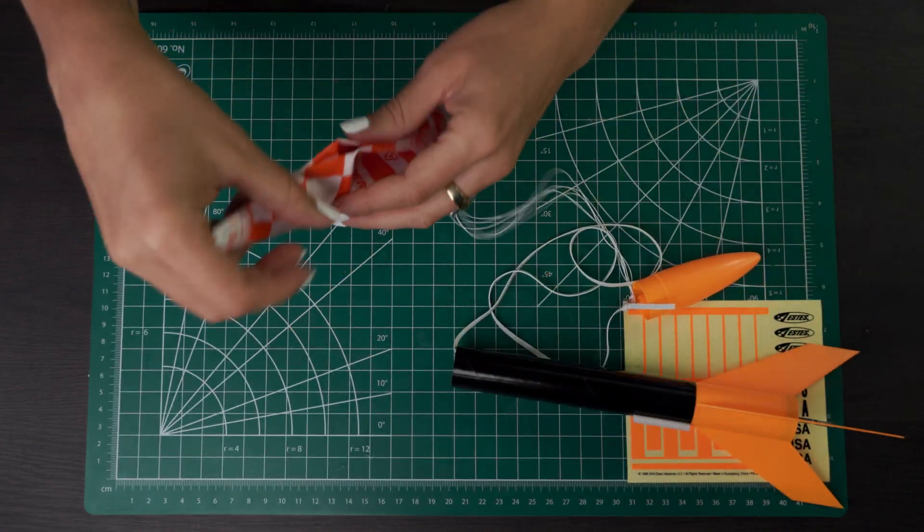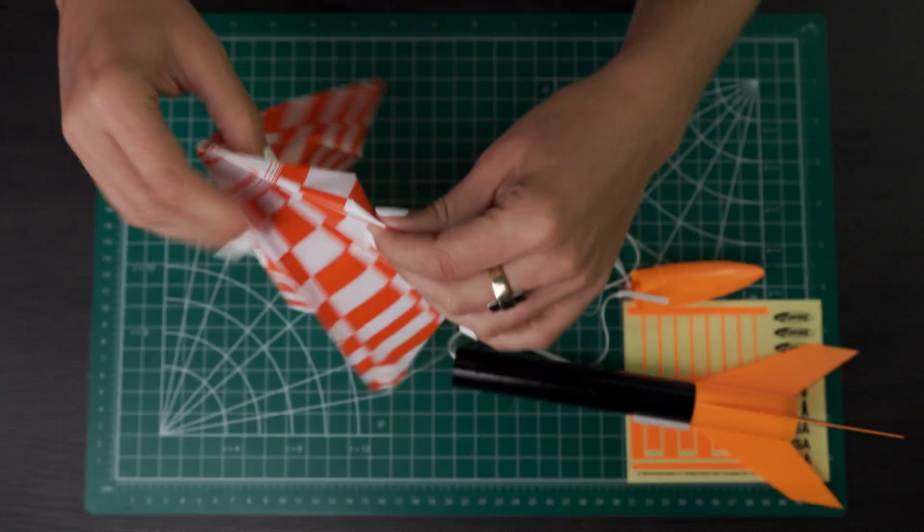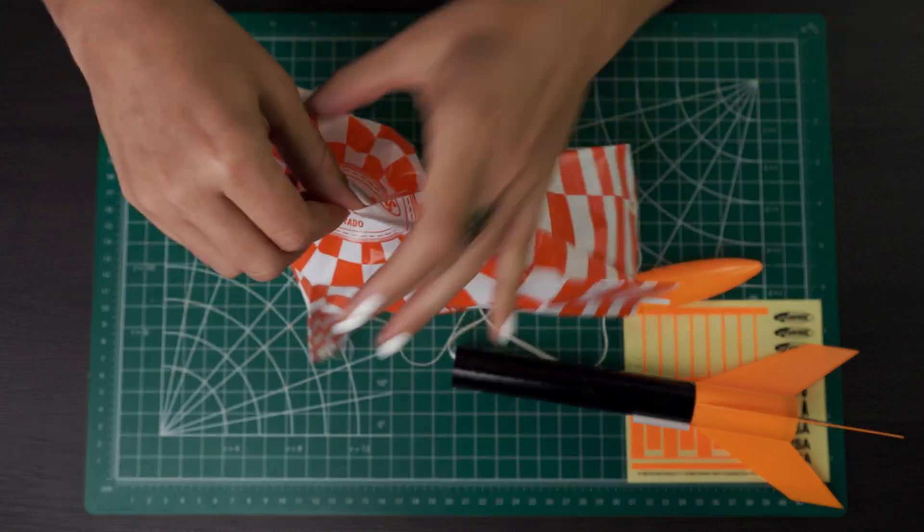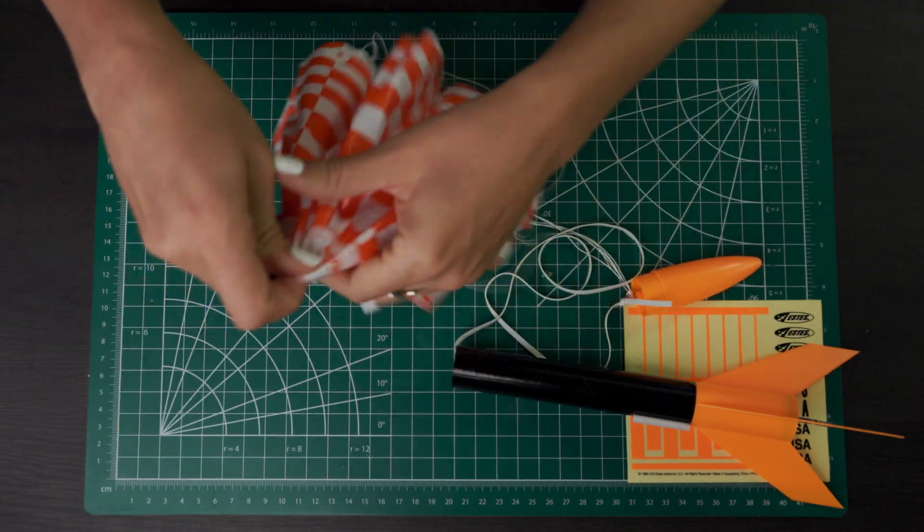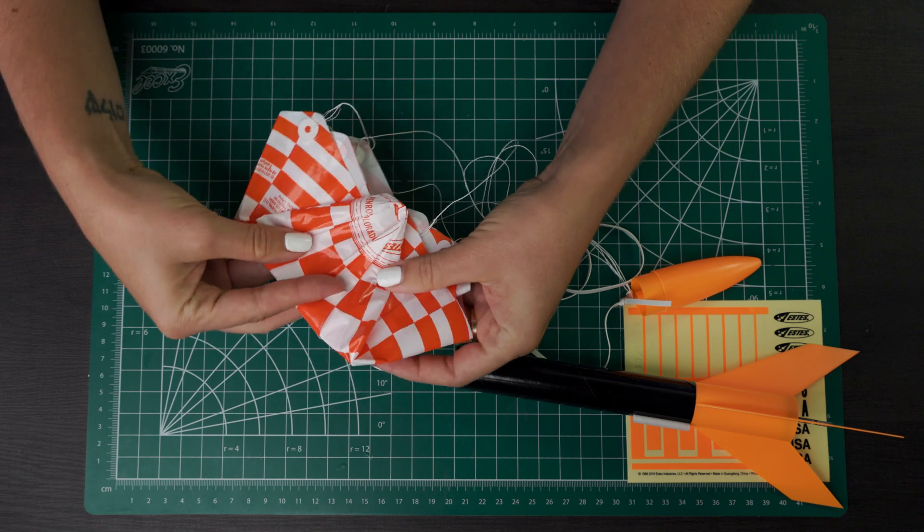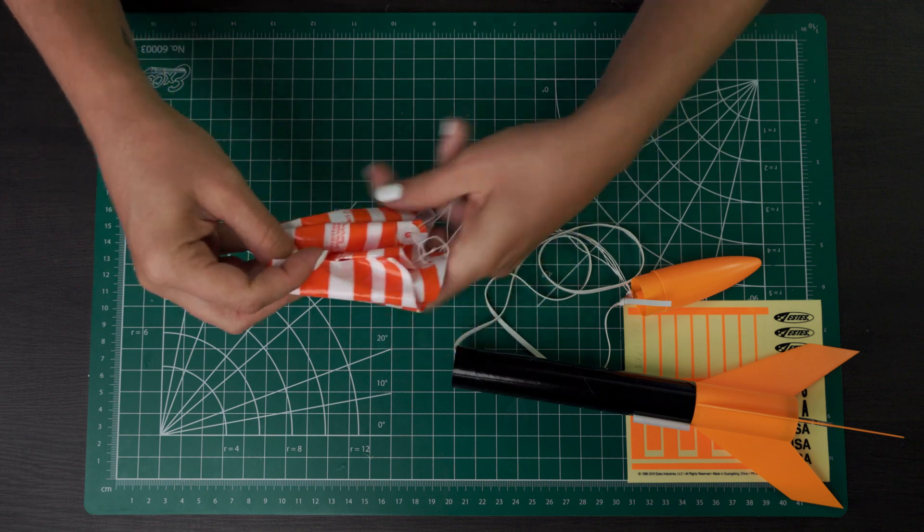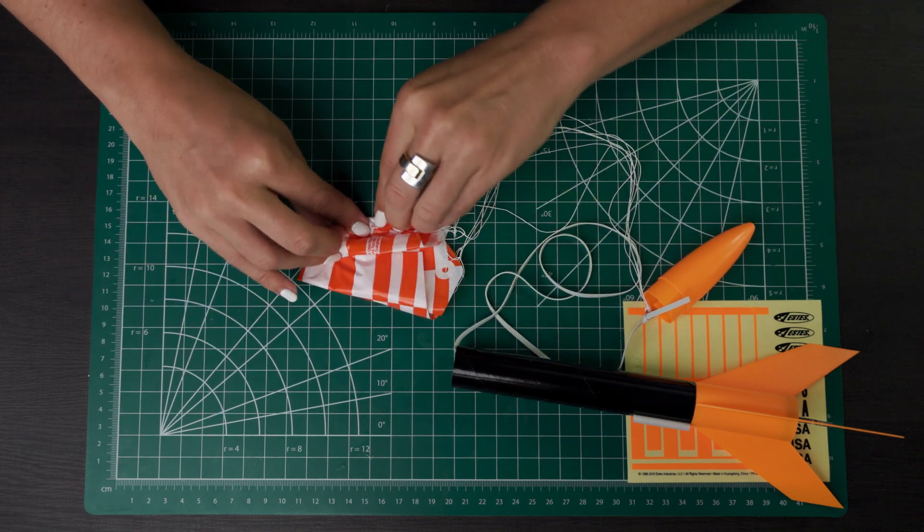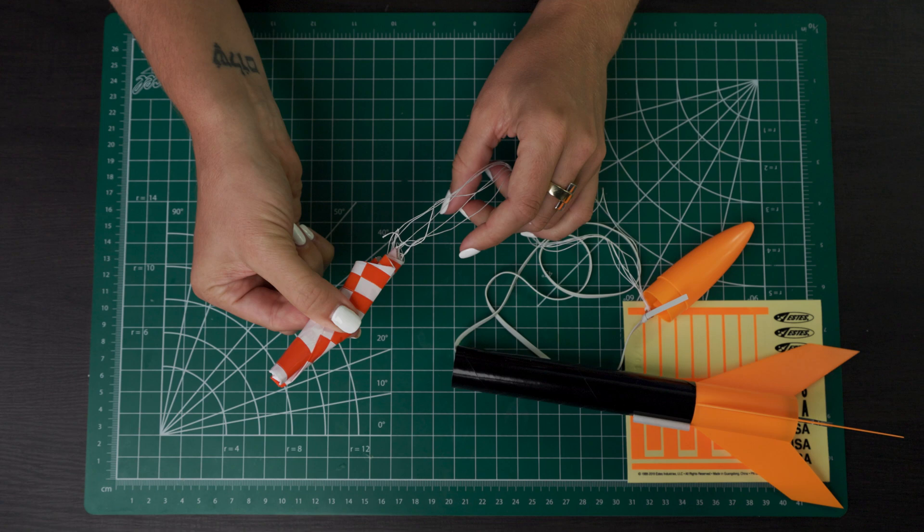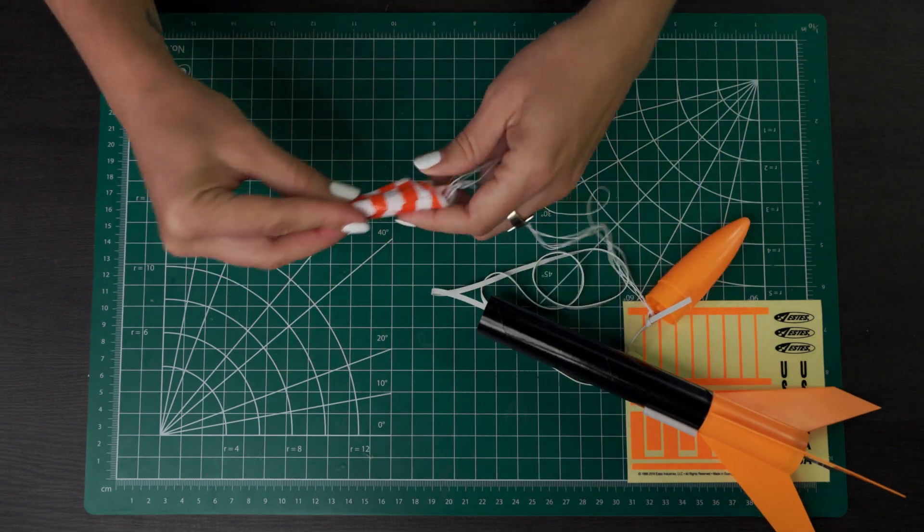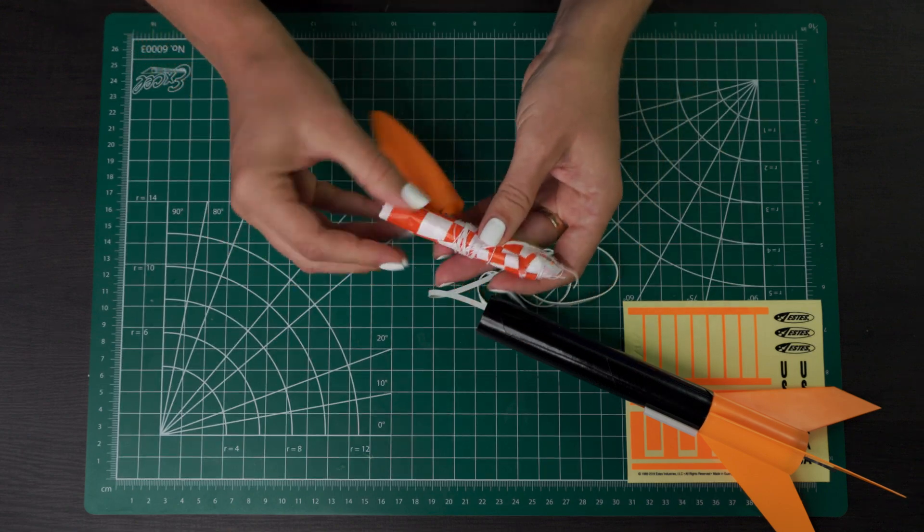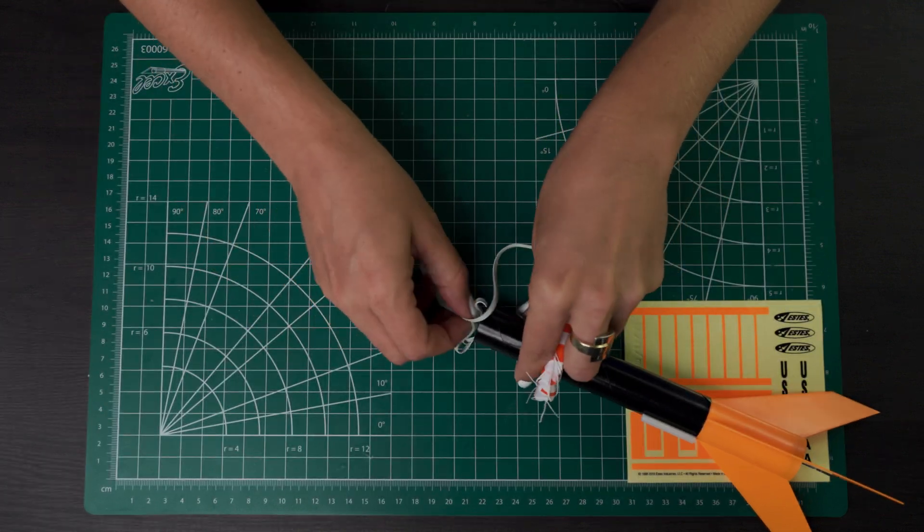Next up to fold the parachute, we're going to go ahead and open it up first just so it's not sticking together. And then I like to grab the center and then pull it down to make a triangle. So now you have your triangle, fold that triangle in half and then fold the sides of the triangle in and then you can roll this pretty tightly from side to side. So your parachute should be about this size. You need it to fit well in that body tube so you don't want it to be too big.